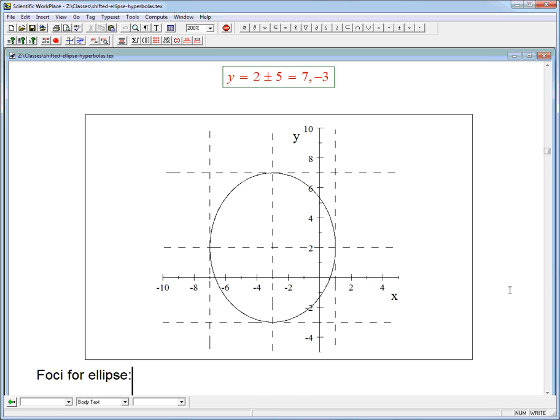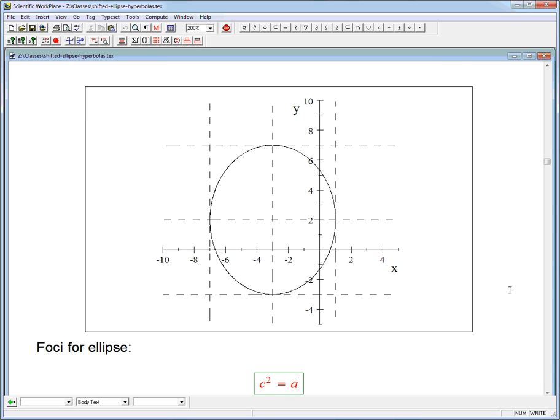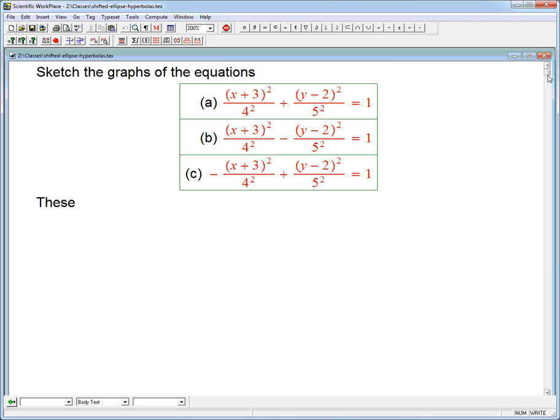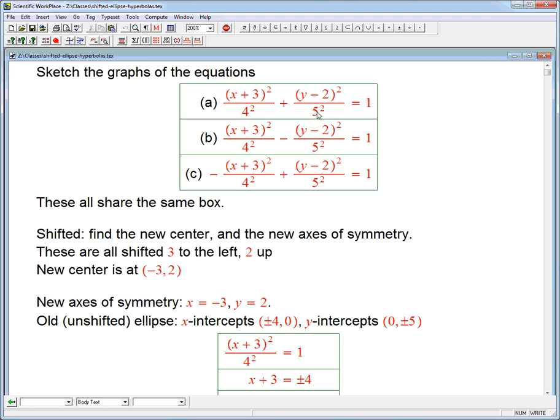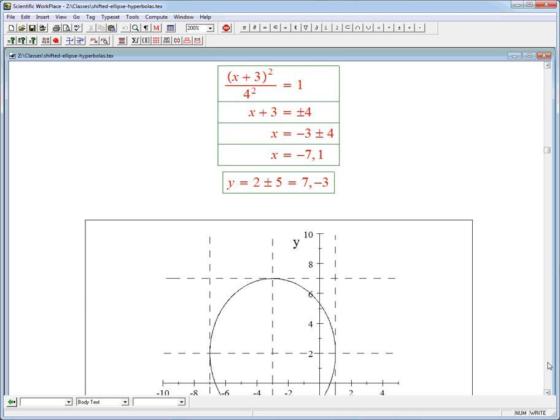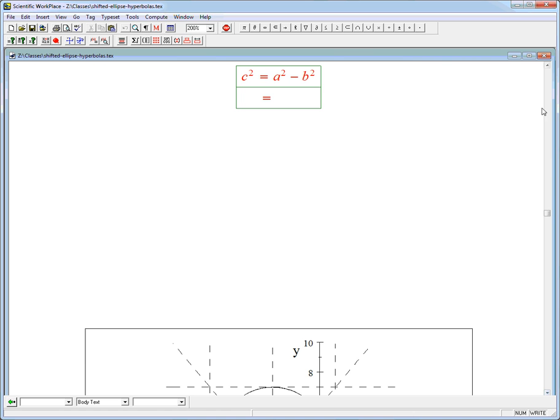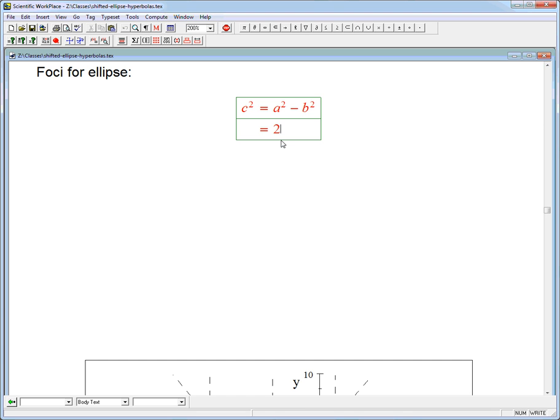Let's go ahead and get the foci for the ellipse. We know that c squared is a squared minus b squared. Which one is a and which one is b? Remember, for an ellipse, it's the bigger that's a. The major axis is going to be vertical for this guy. And so the foci for the ellipse. So that's going to be 25 minus 16 equals 9, or c equals 3.